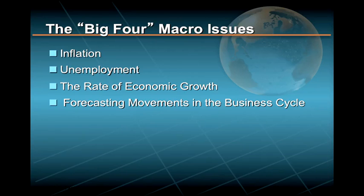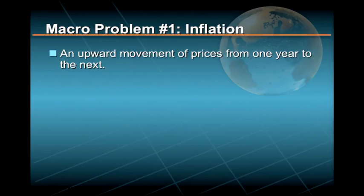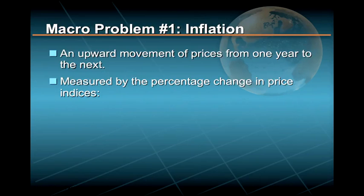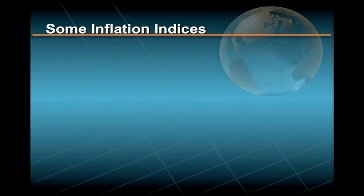The four most important policy problems in macroeconomics are inflation, unemployment, the rate of economic growth, and movements in the business cycle. Inflation is defined as an upward movement of prices from one year to the next. It is typically measured by the percentage change in price indices such as the consumer price index, the producer price index, or the GDP deflator.